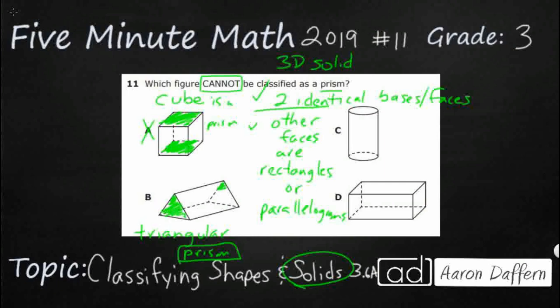So these two, it doesn't matter if they are rectangles or parallelograms. The other three faces have to be rectangles or parallelograms and they are. You see we've got some rectangles here and then the one on the back and then there's one on the bottom. So it's not B.